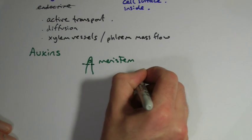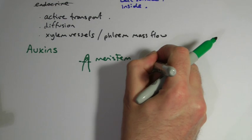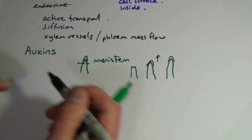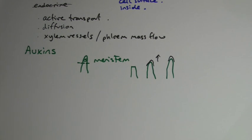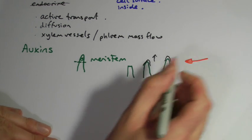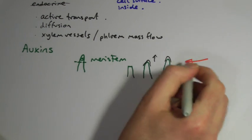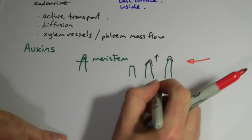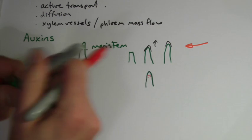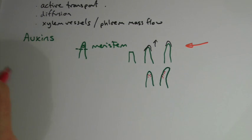Various experiments demonstrate auxin effects: you can cut the tip off and growth stops, or you can cover the tip with foil and it keeps growing straight upwards. If you put an intense light source onto one side, the plant grows towards it. What actually happens is the auxins, which are normally evenly distributed, move over to one side of the plant, causing more elongation on that side so the plant grows towards the light.